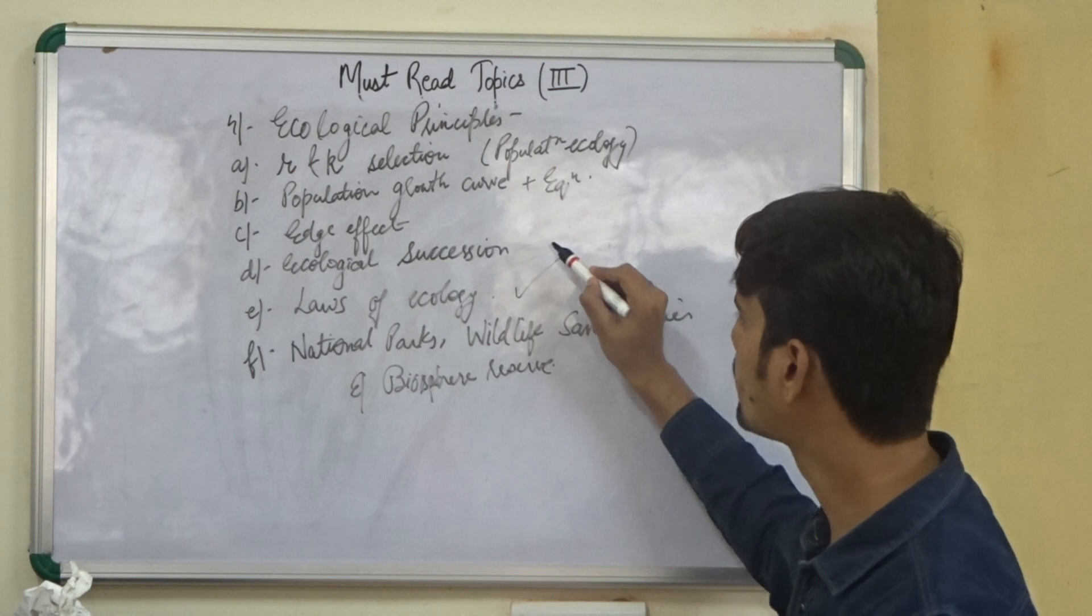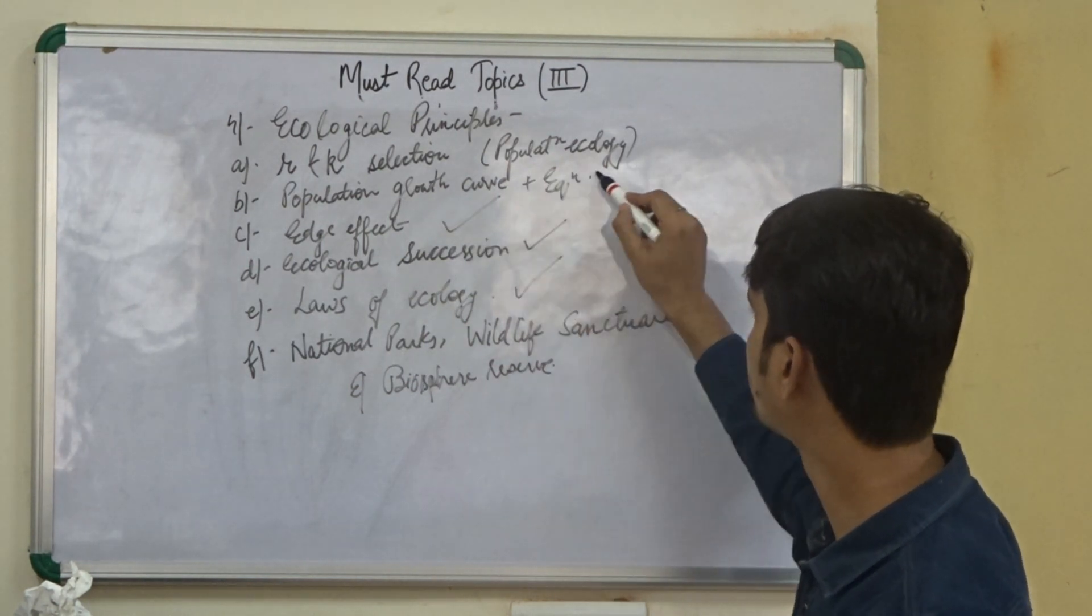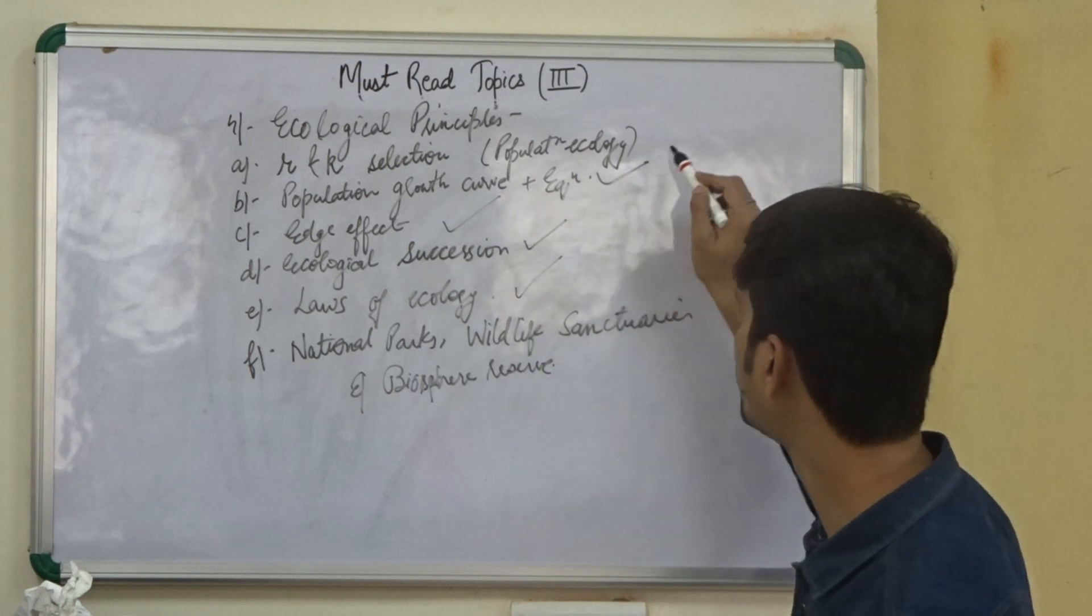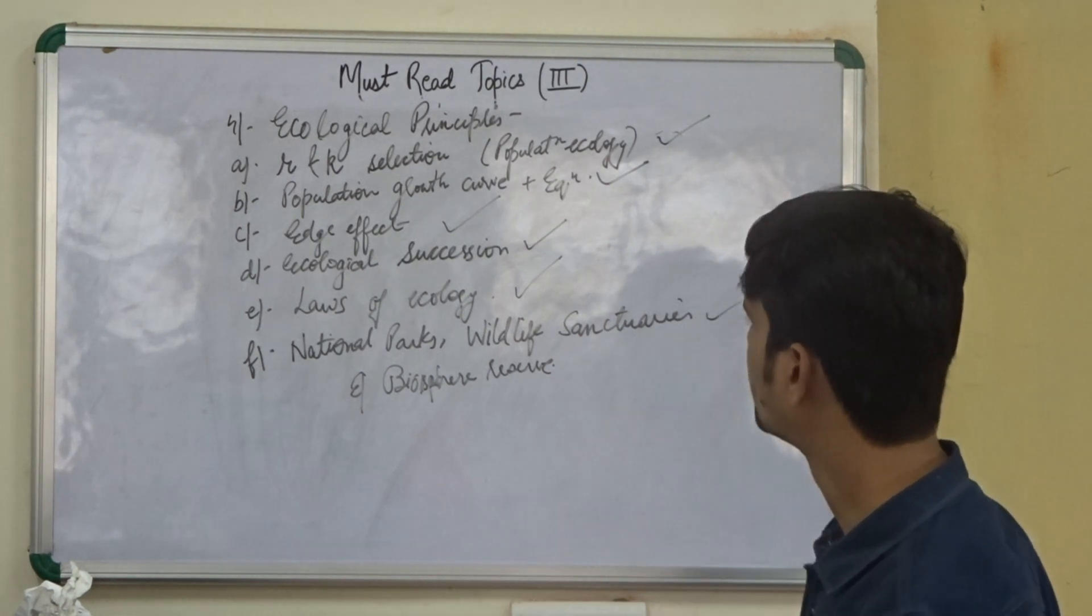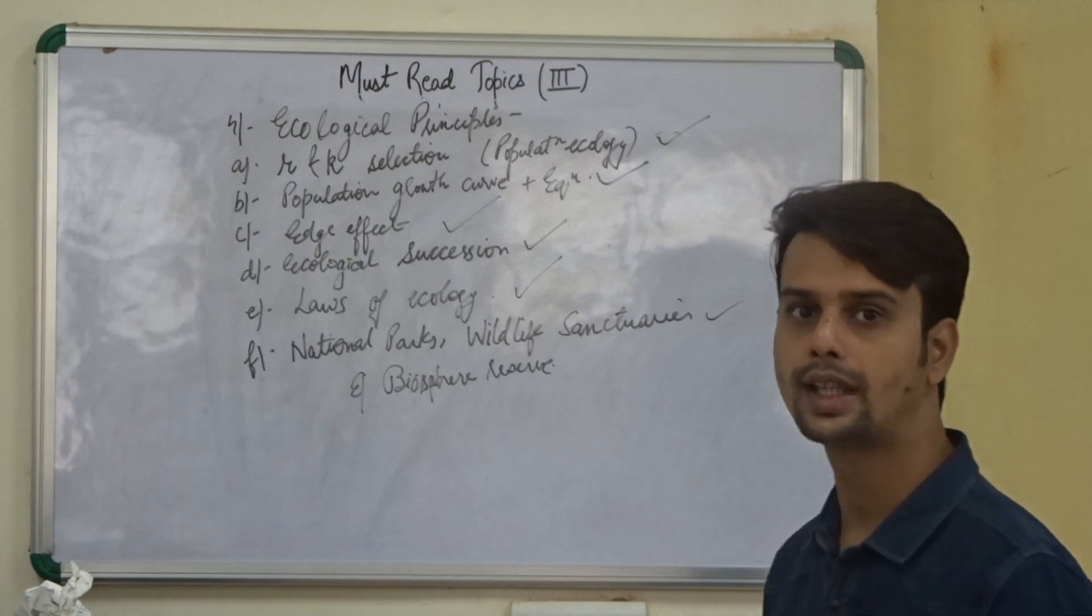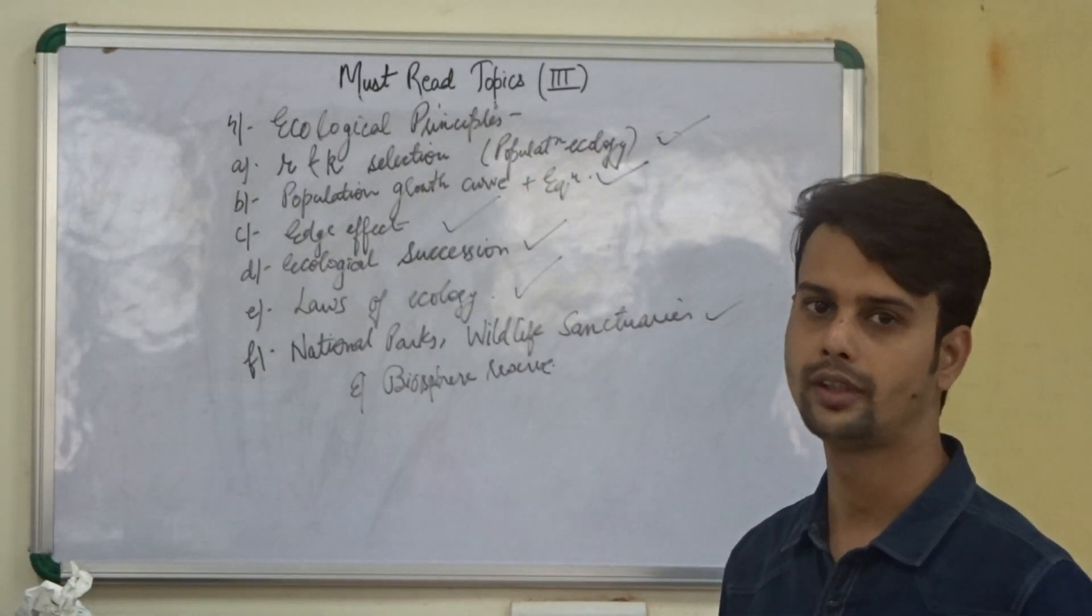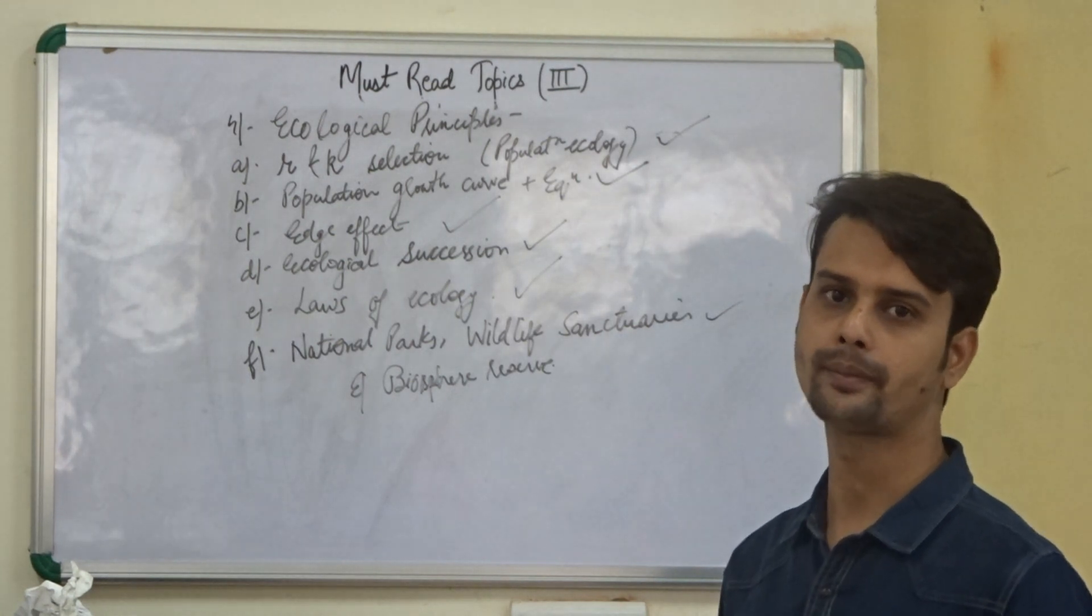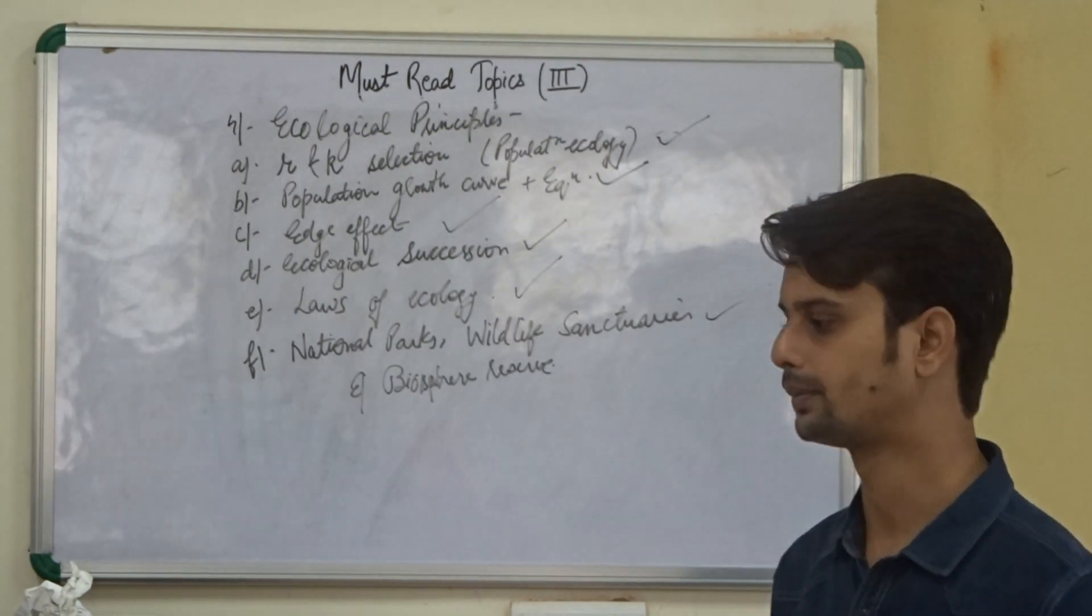We need to know about the different laws. We need to know about the ecological succession, the edge effect, the population growth curve and its related equations, the R and K selection, and so these are the topics. Six topics in the ecological principles. So that covers up about this third part of the video. There will be a final part that will be given by Vinay. Hope you like this part. Thank you.